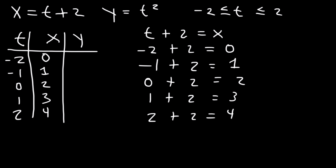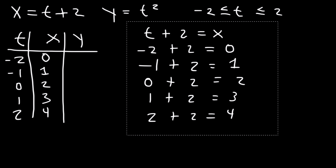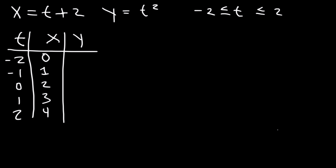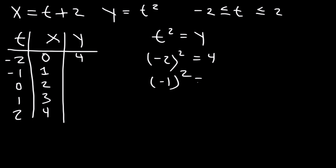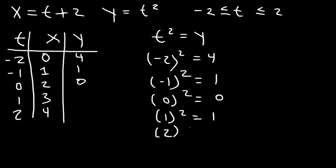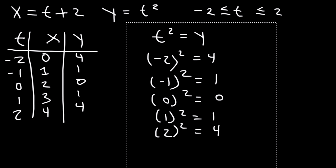Now let's do the same for the y values. We know that y equals t squared. Plugging in negative 2, y is 4. Plugging in negative 1, negative 1 squared is positive 1. 0 squared is 0. 1 squared and 2 squared give us 1 and 4. Once you complete the table, you can go ahead and graph it.